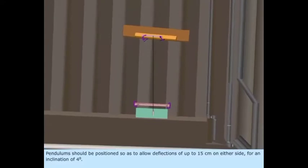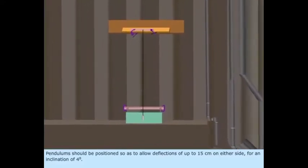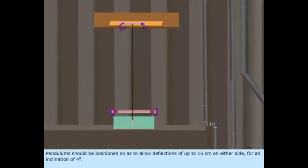Pendulums should be positioned so as to allow deflections of up to 15 cm on either side for an inclination of 4 degrees.